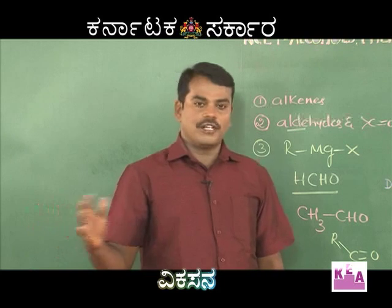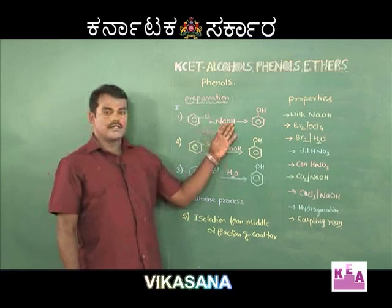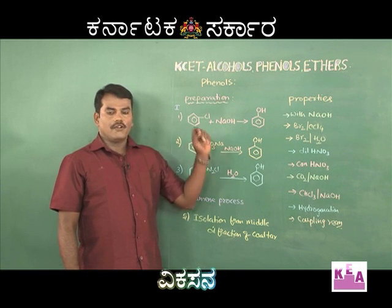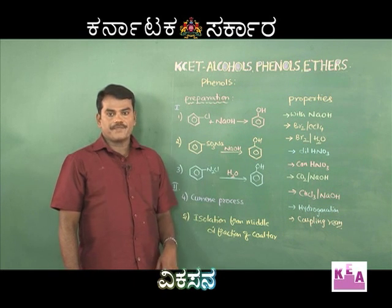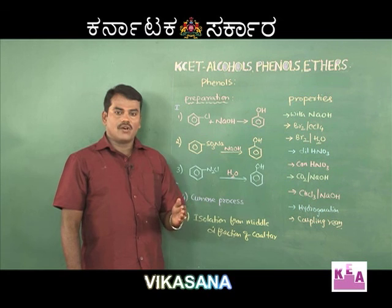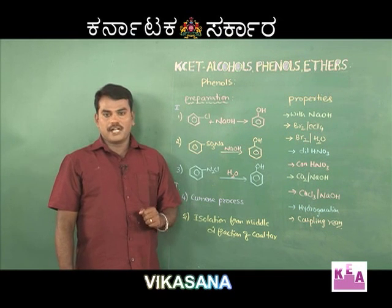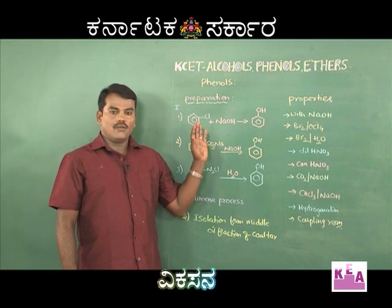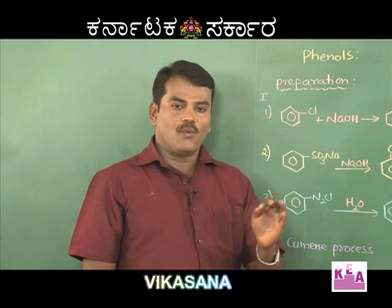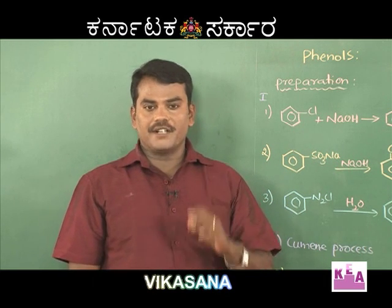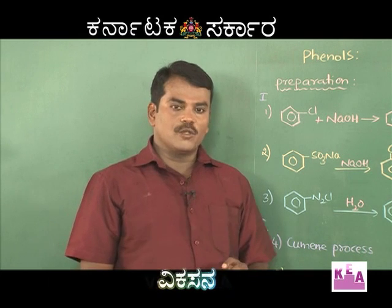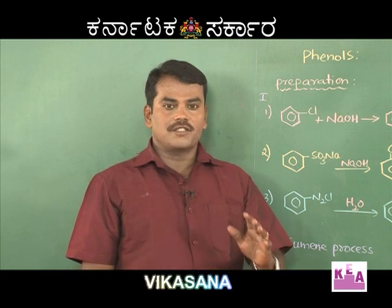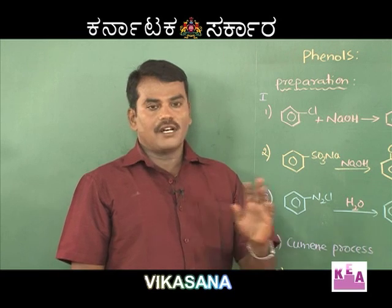Preparation means obtaining phenol in small quantities in the laboratory; manufacture means obtaining it in large quantities in industry. Phenols are aromatic compounds where the OH group is directly bonded to the benzene ring. If the phenol contains one OH group it is monohydric, two OH groups is dihydric, and three OH groups is trihydric.